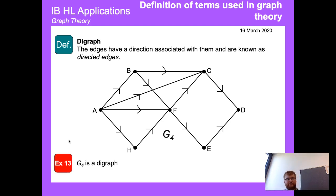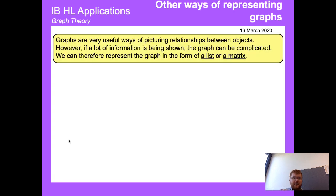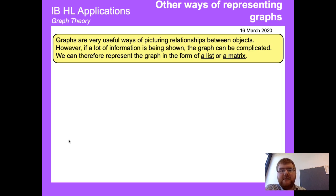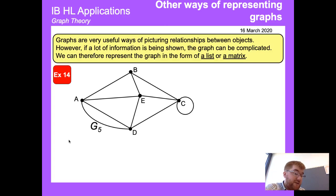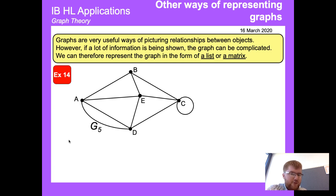Graphs, particularly digraphs, are very useful for picturing relationships between objects, but when there's a lot of information they can get complicated and we need another form of representation. We can use a list or, if you've done matrices, a matrix is often a very powerful tool. Let's take the unsimple graph G5 — it's unsimple because there is a loop at C and also because A and D are connected twice.